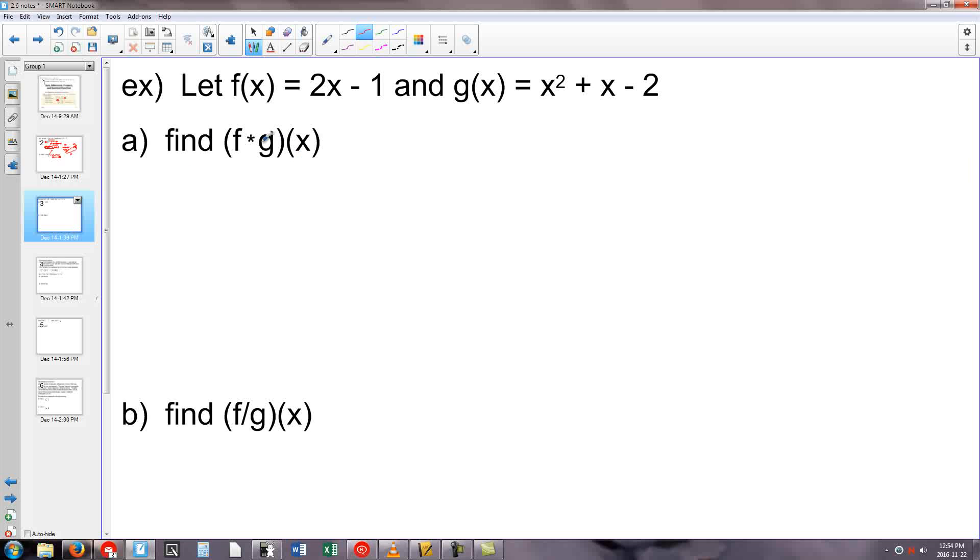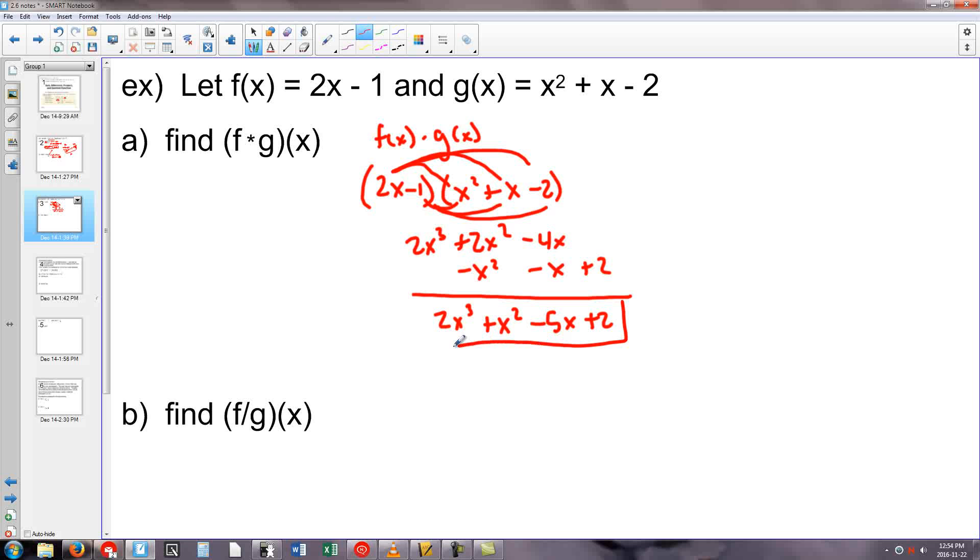The next type of problem is multiplication. Here I have the equation f times g of x, meaning I want to take f of x and times it by g of x. That would be 2x minus 1 multiplied by x squared plus x minus 2. As I go through and do this, it's just a FOIL question. I'm going to get 2x cubed plus 2x squared minus 4x, and then minus x squared minus x and plus 2. If I combine all my like terms, I get 2x cubed plus x squared minus 5x plus 2. Pretty straightforward. That would be our new equation.